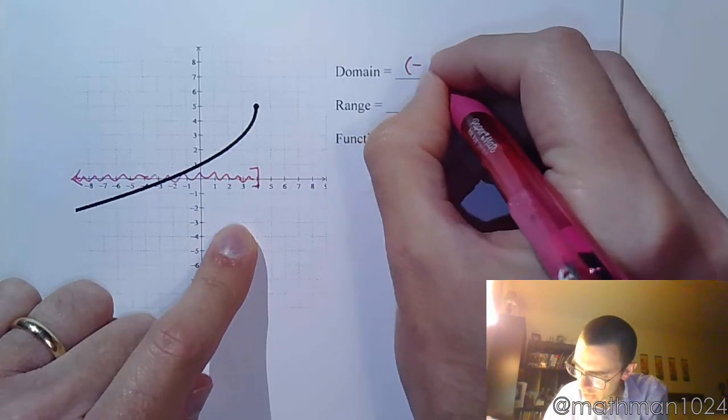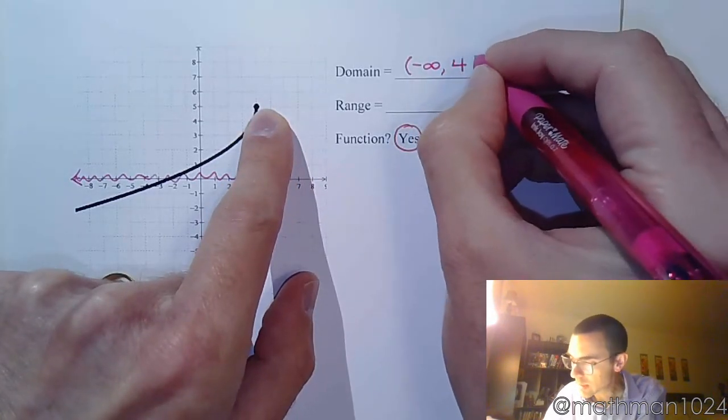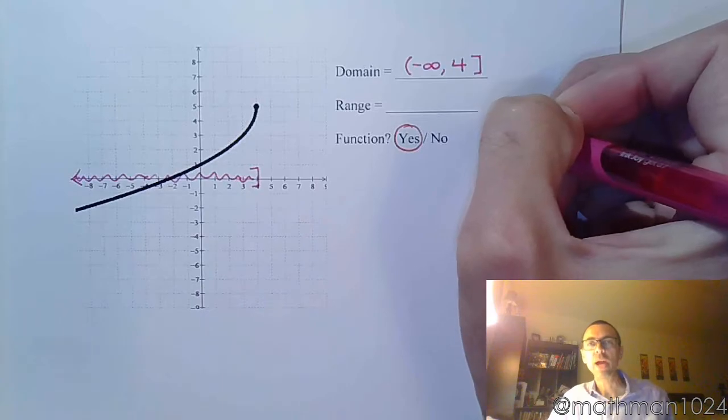So the domain is from negative infinity to positive 4. You see how this is a closed point? So we're going to get a bracket on that.